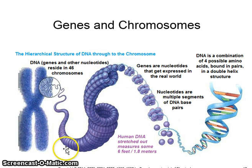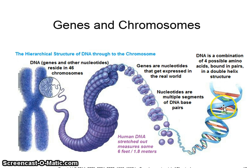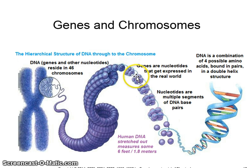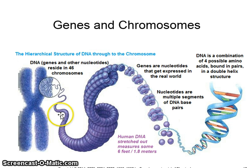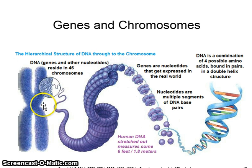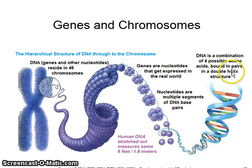This image shows genes and chromosomes. You can see that DNA is a combination of amino acids. As it coils and condenses, you have the genes which are nucleotides that are expressed in the real world, and they wind until you have the chromosomes seen under a microscope, which contain billions of these strands.